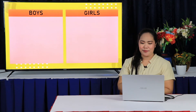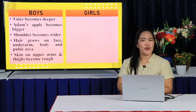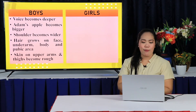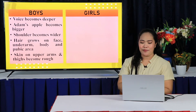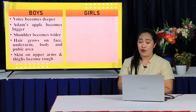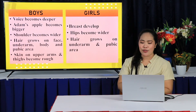For boys, the voice becomes deeper, the Adam's apple becomes bigger, shoulders become wider than the hips, hair grows on the face, underarm, body, and pubic area, and the skin on the upper arm and thighs becomes rough. For girls, breasts develop, hips become wider than the shoulders, and hair grows on the underarm and pubic area.